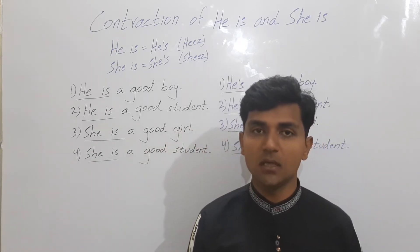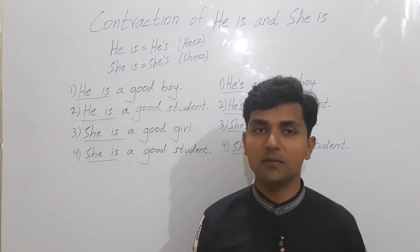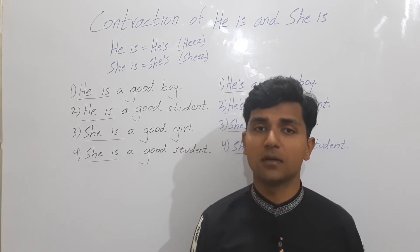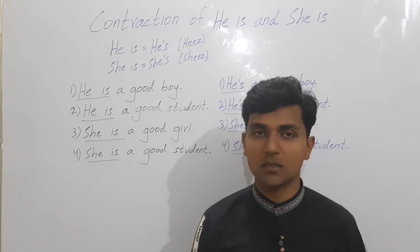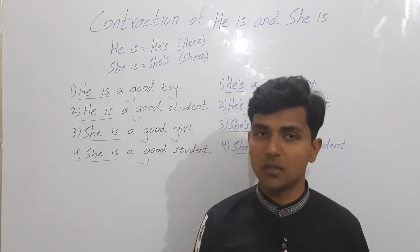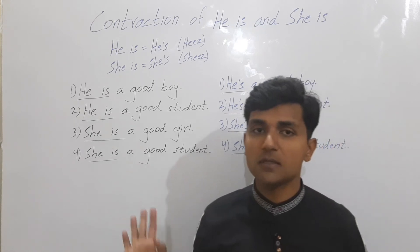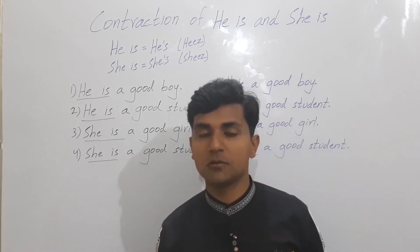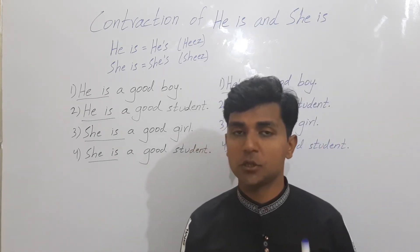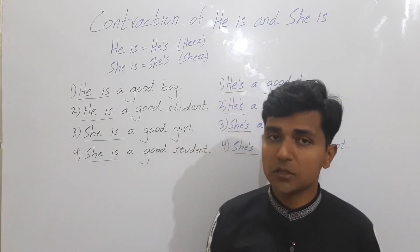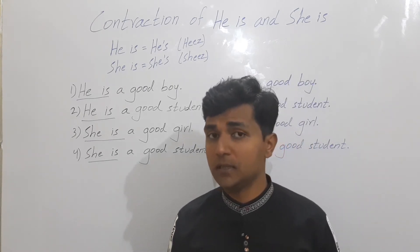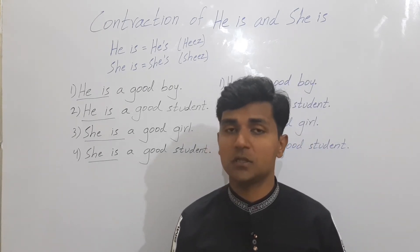'He is a good boy' — 'he's a good boy.' 'She is a good girl' — 'she's a good girl.' So 'she is' becomes 'she's' and 'he is' becomes 'he's.' That was our today's topic about the short form or contraction of 'he is' and 'she is'.